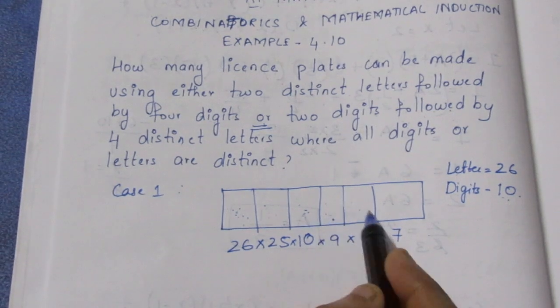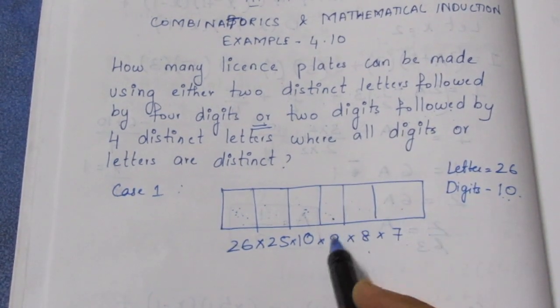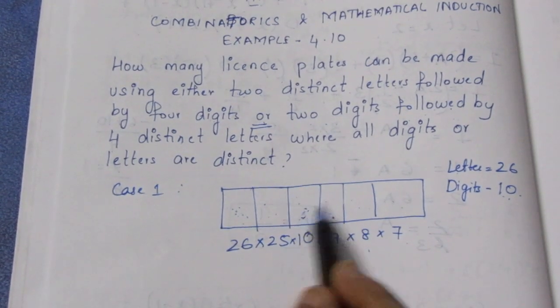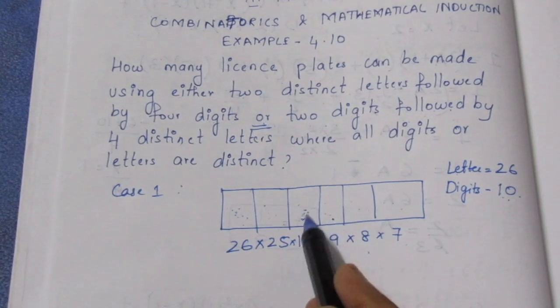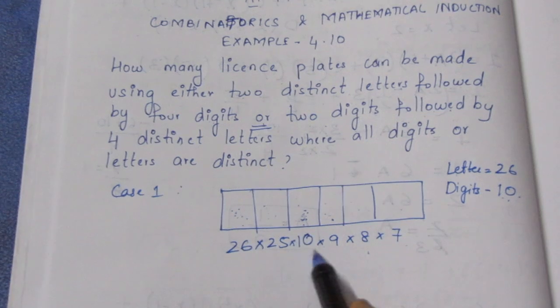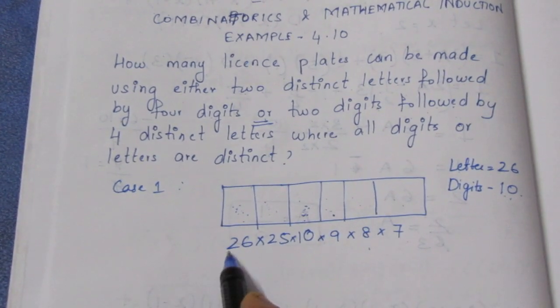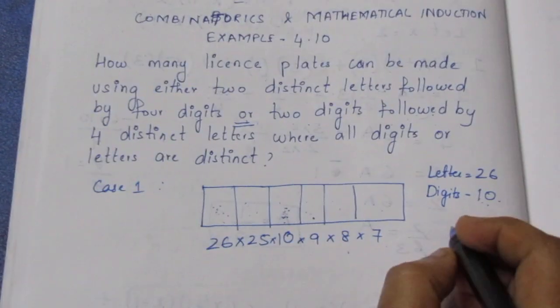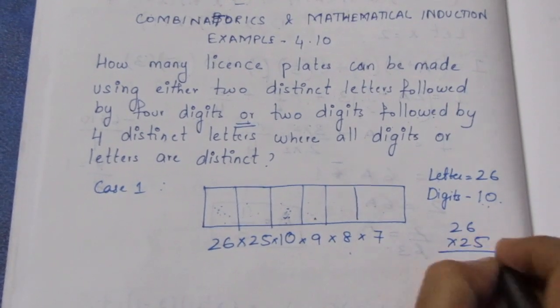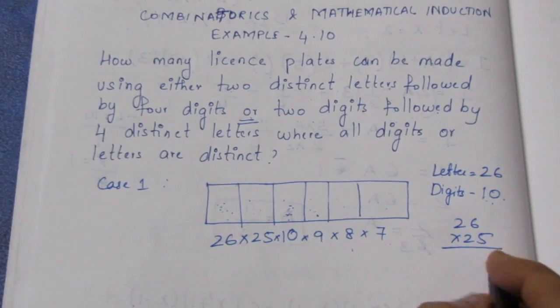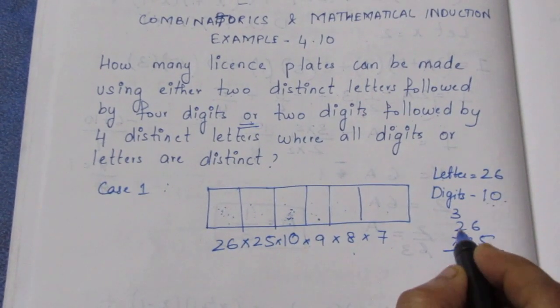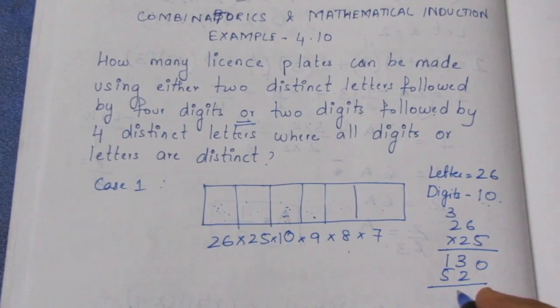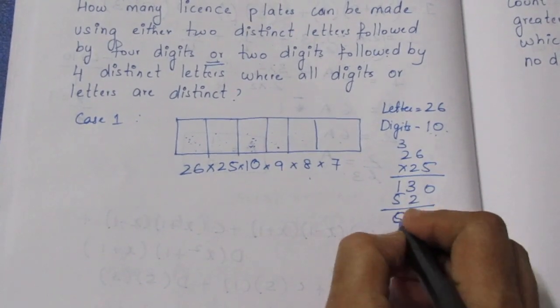If you fill 8, then fill 7. The total number of ways: 26 x 25 x 10 x 9 x 8 x 7. 5 x 6 = 30, 5 x 2 = 10, plus 3 is 13, 6 x 2 = 12.